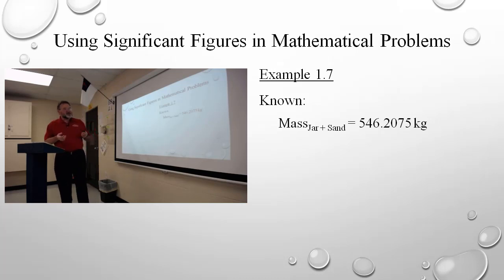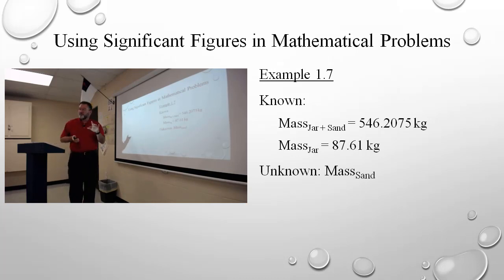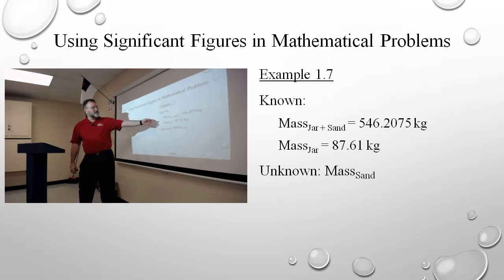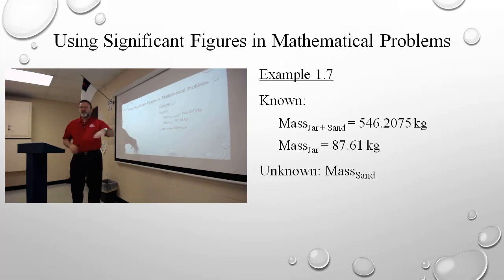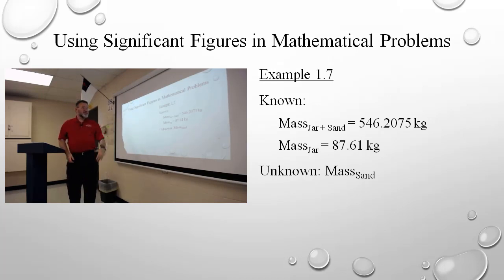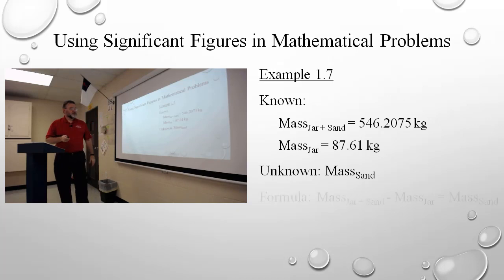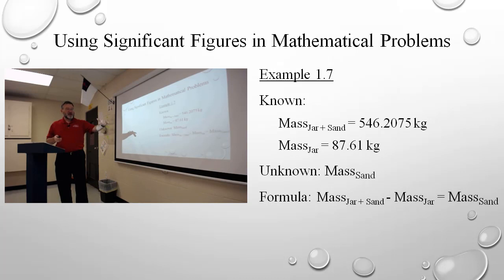In your book, example 1-7 says you've got this jar with sand in it. The jar with sand has a mass of 546.2075 kilograms. The jar has a mass of 87.61 kilograms. They ask: what is the mass of the sand? The mass of the whole minus the mass of the jar equals the mass of the sand. As I plug that in — 546.2075 kilograms minus 87.61 kilograms — if you just punch it on your calculator, your answer is 458.5975 kilograms.